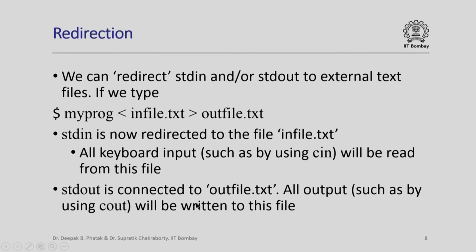It is possible to redirect the two standard files stdin and stdout to external text files stored on disk. For example, if we type at the command line: myprog < infile.txt > outfile.txt, this means do not read data from stdin but read from infile.txt. In short, stdin is now redirected to the file infile.txt, so all keyboard inputs such as by using cin will now be read from this file and not from keyboard. Similarly, > outfile.txt means that stdout is connected to outfile.txt, so all output such as that produced by cout will now be written to this file.